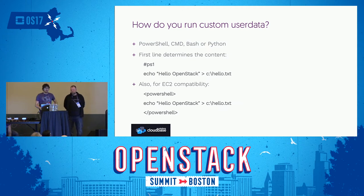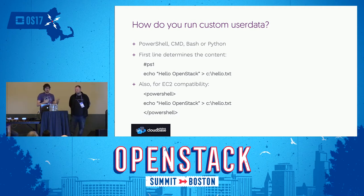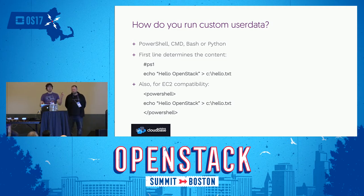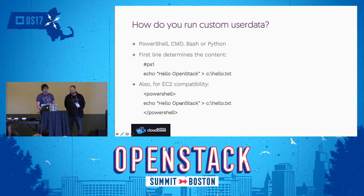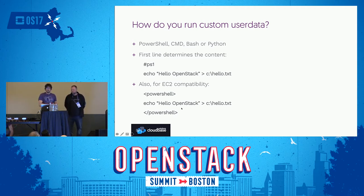A very common question is how do you run custom user data. You can run PowerShell, CMD — old-school command prompt batch files — Bash, or Python. To determine the content of user data, it's very simple: the first line will start with '#ps1' or '#cps1'. That's similar to the shebang model you might be familiar with on Linux — if it starts with a typical shebang, we know it's a Bash script. We also support the syntax that EC2 folks use, which is simply a PowerShell tag, then the script, then end. Both are supported, meaning you can have the same identical user data script working on Amazon EC2 and also on CloudBase Init.